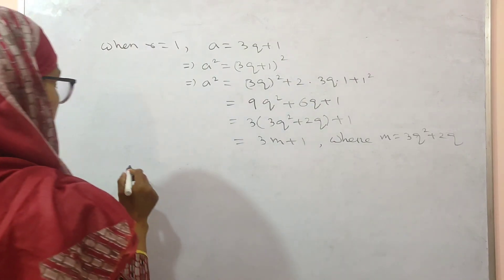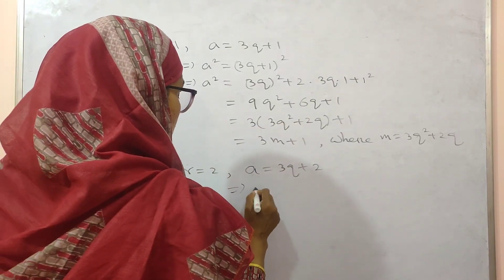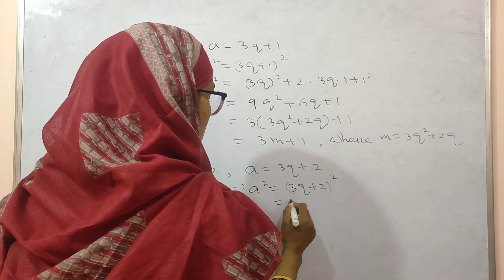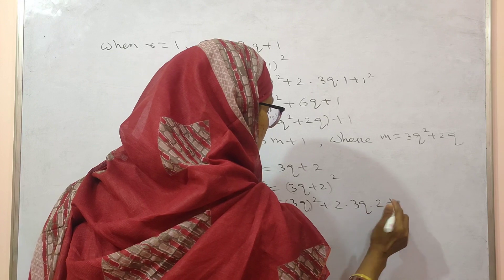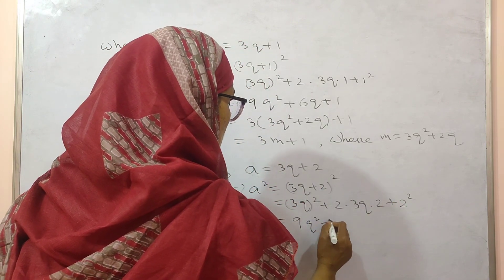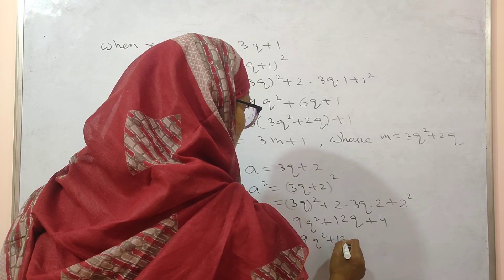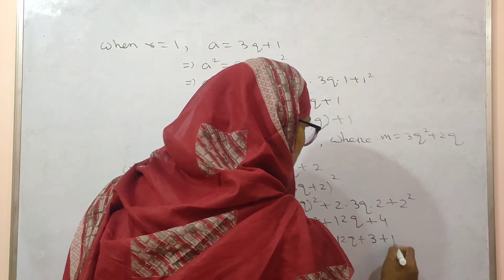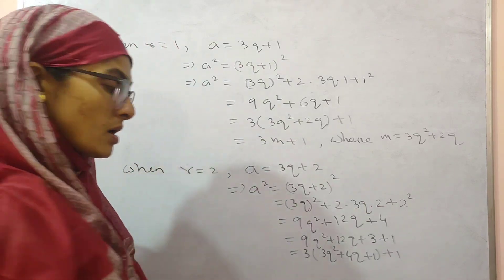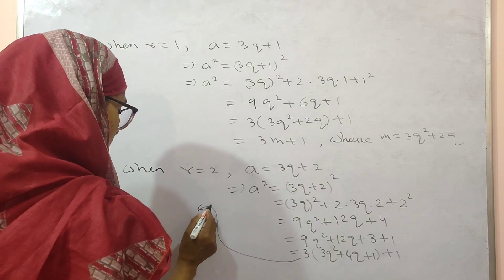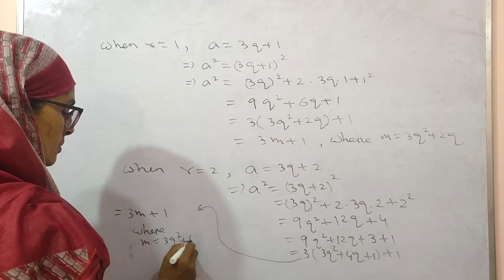When r equal to 2, you will get A equal to 3q plus 2. Squaring both sides: (3q plus 2) whole square. Using the (A plus B) squared formula: 9q squared plus 2 into 3q into 2 plus 2 squared, which equals 9q squared plus 12q plus 4. Writing 4 as 3 plus 1 and taking 3 common: 3(3q squared plus 4q plus 1) plus 1, which is of the form 3M plus 1, where M equals 3q squared plus 4q plus 1.